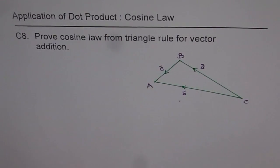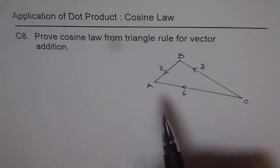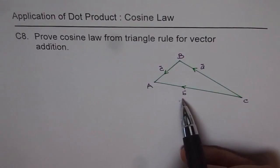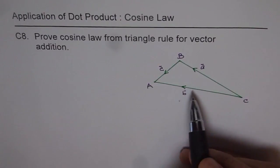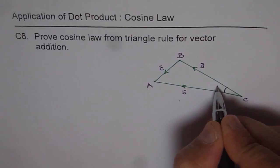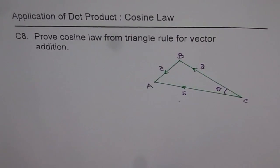Cosine law is the magnitude of C square should be equal to sum of squares of these two magnitudes minus 2 times AB cos theta, where theta is the angle in between. So that is cosine law which we want to prove.